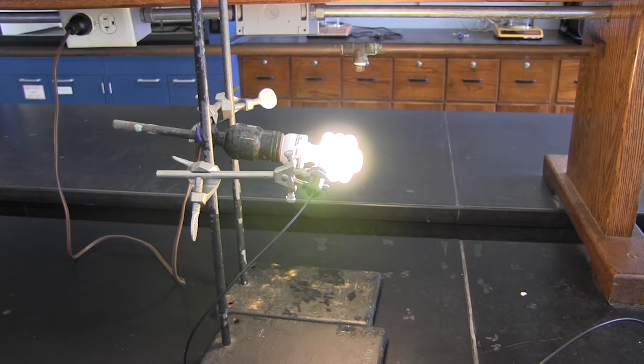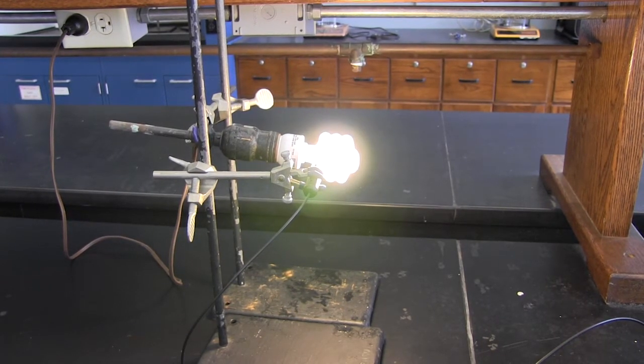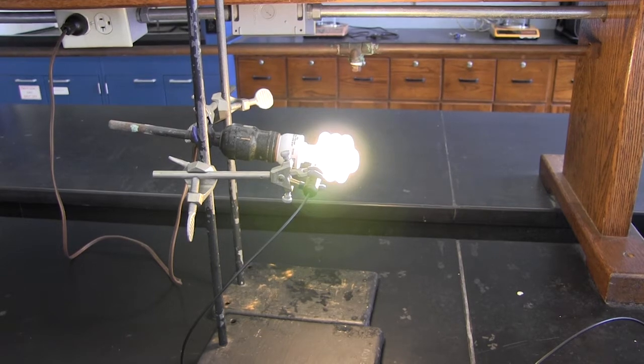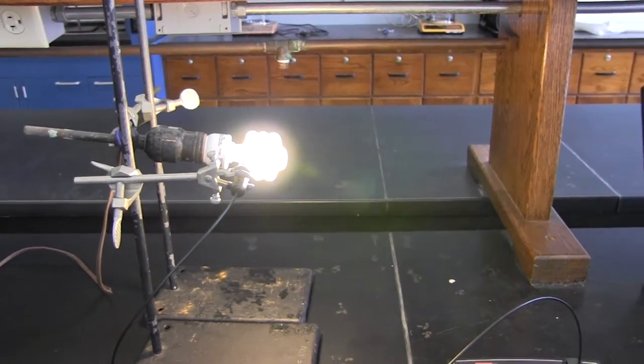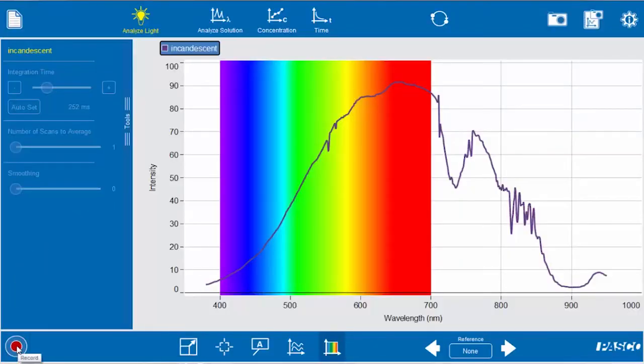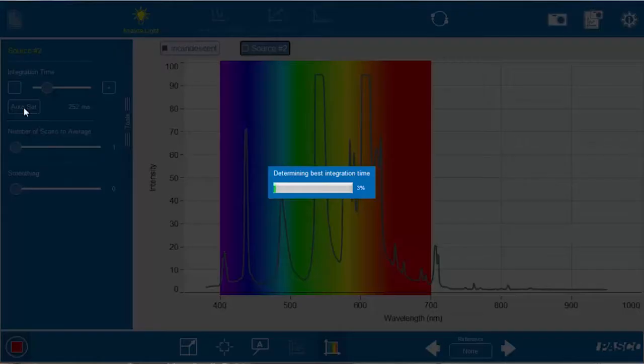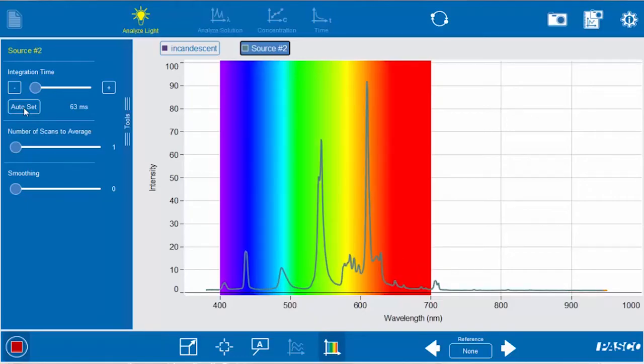So now we've switched light bulbs and changed over to a compact fluorescent light bulb, the newer style light bulbs that are in homes, and we want to look at what its spectrum looks like. So again you just press the play button in the bottom left-hand corner of your screen and the integration time is too high, so we're going to auto set the integration time and there you see the spectrum for the compact fluorescent bulb.